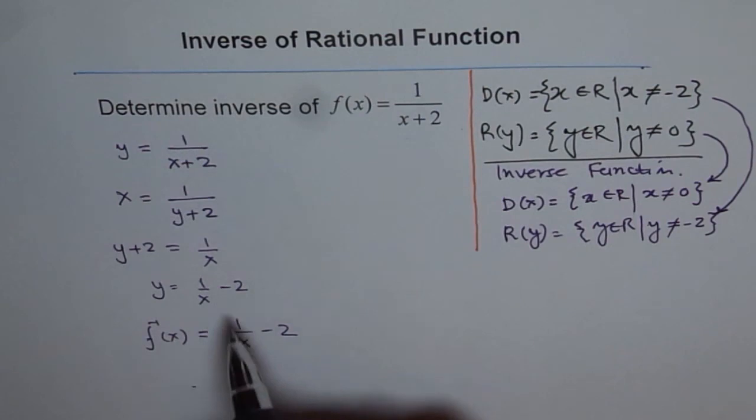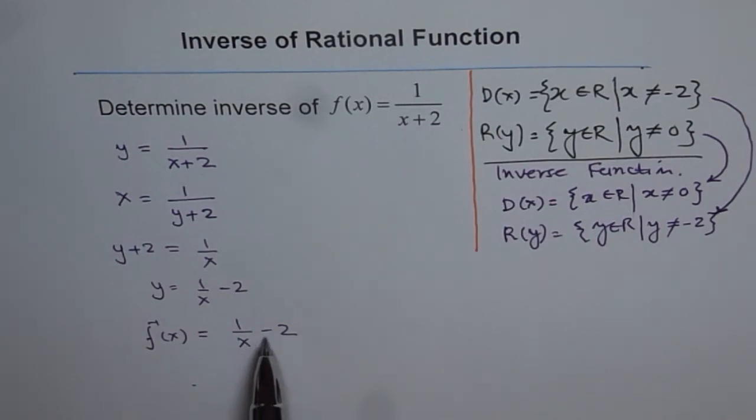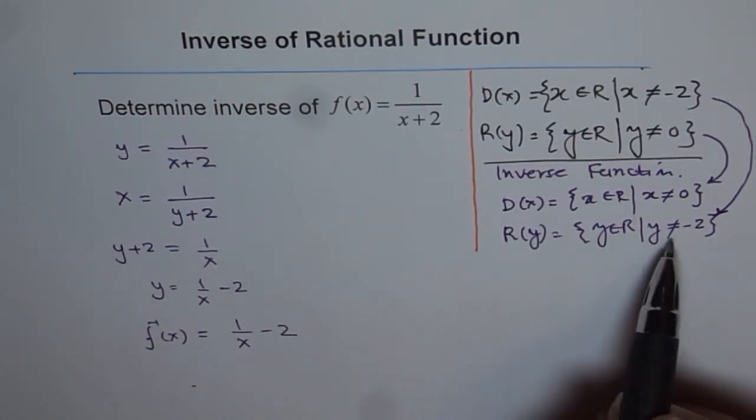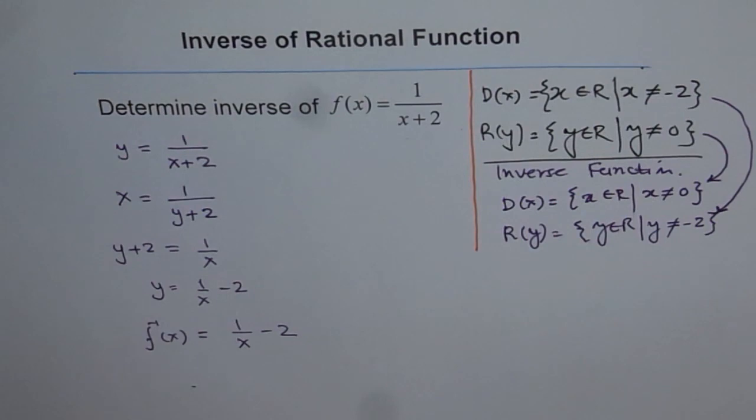Now from here you can check—your domain matches, domain is x not equal to 0, and the range: the horizontal asymptote for this function will be at minus 2, and therefore the range is that y is not equal to minus 2. So that is important, and it's a sure-shot test that whatever you did is perfectly fine. Thank you.